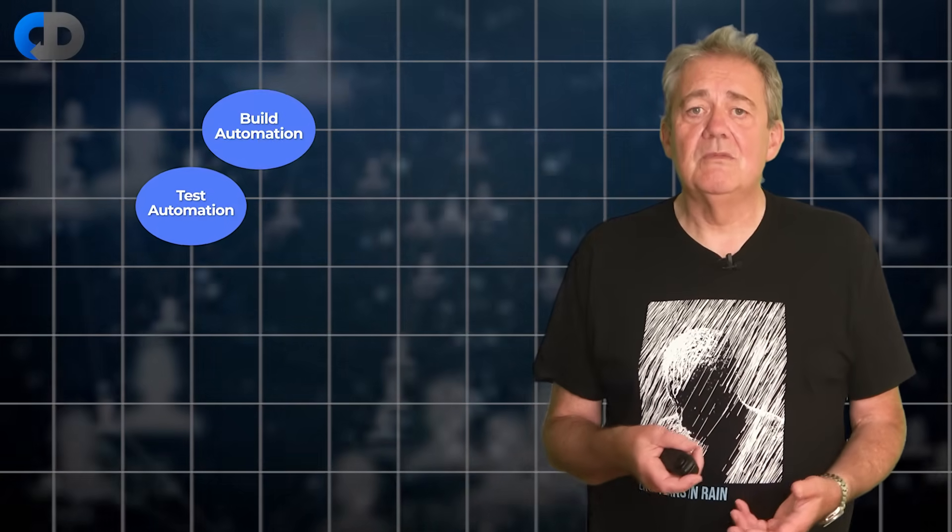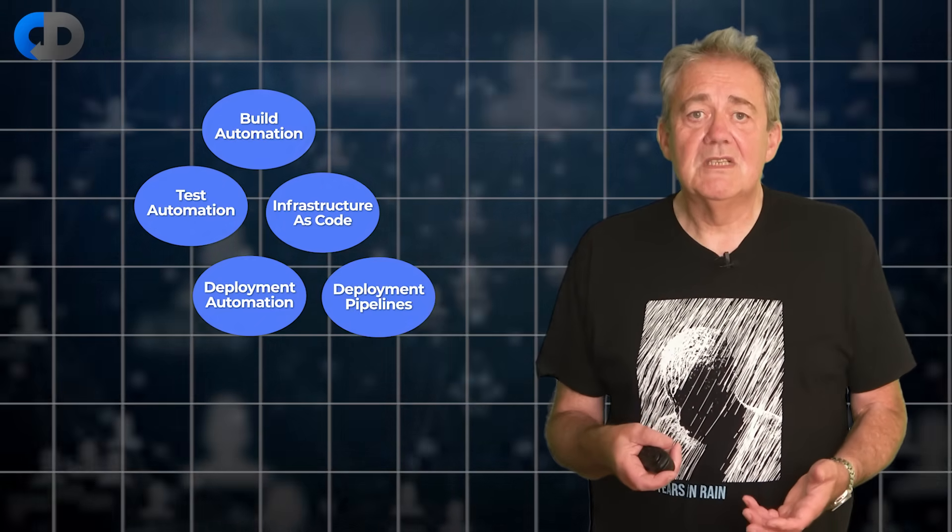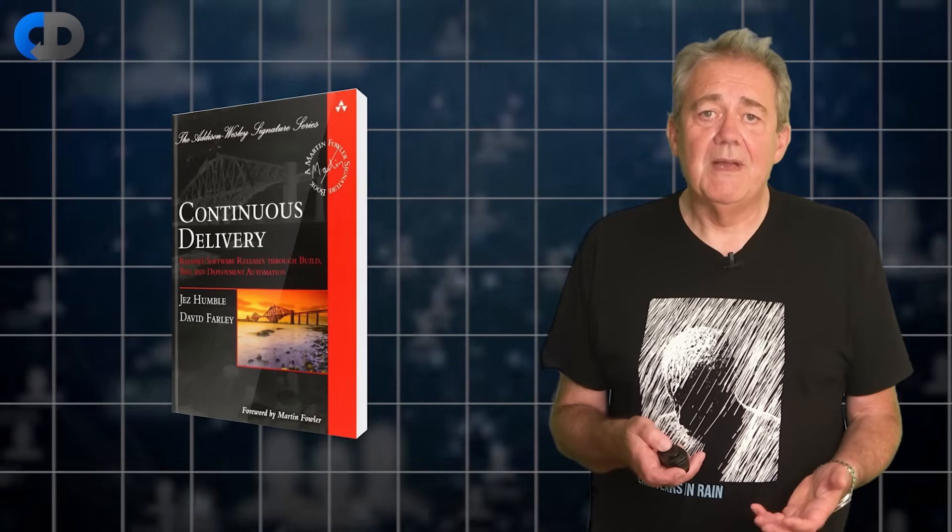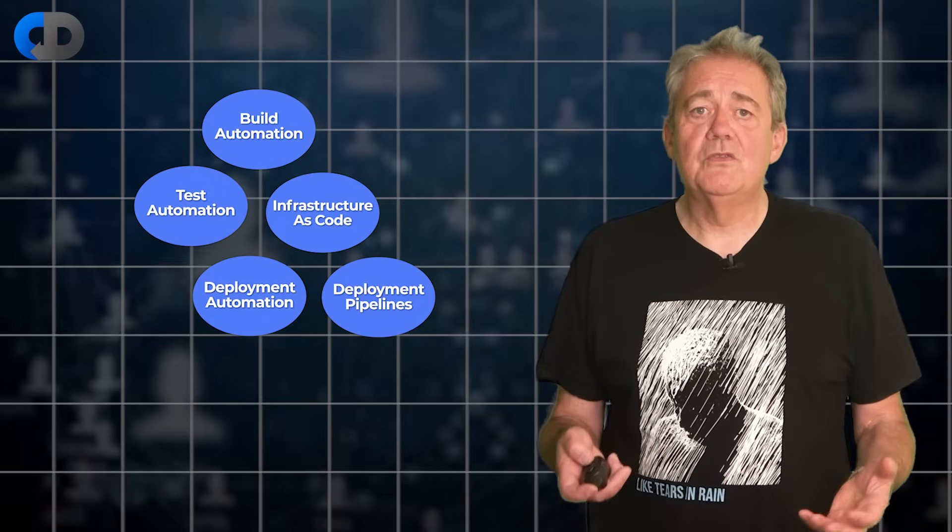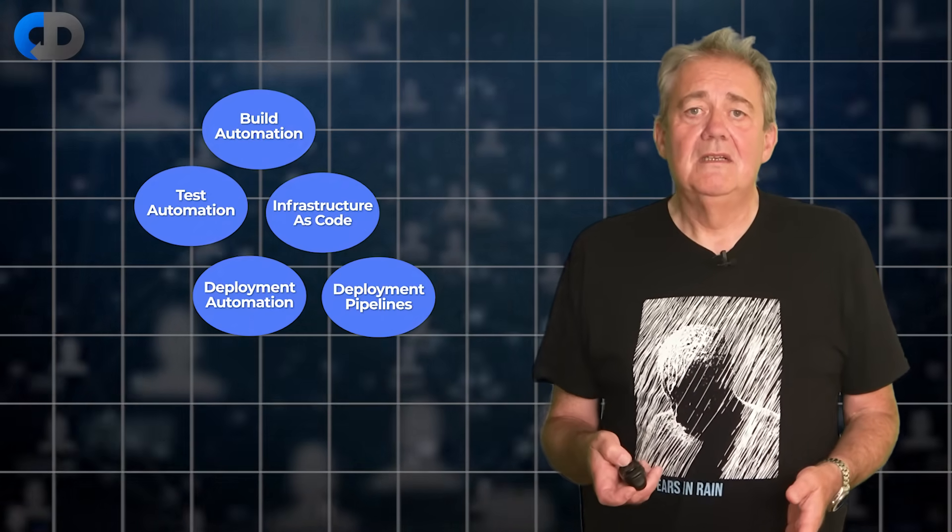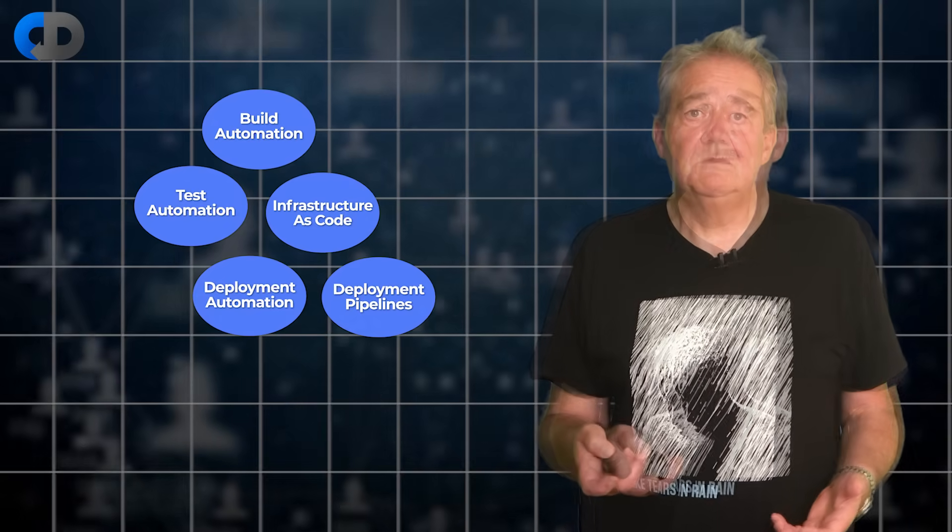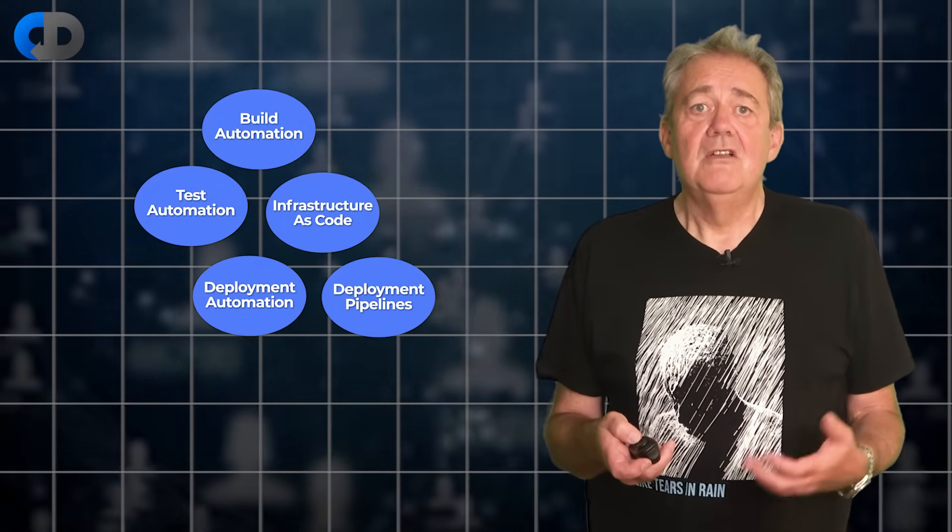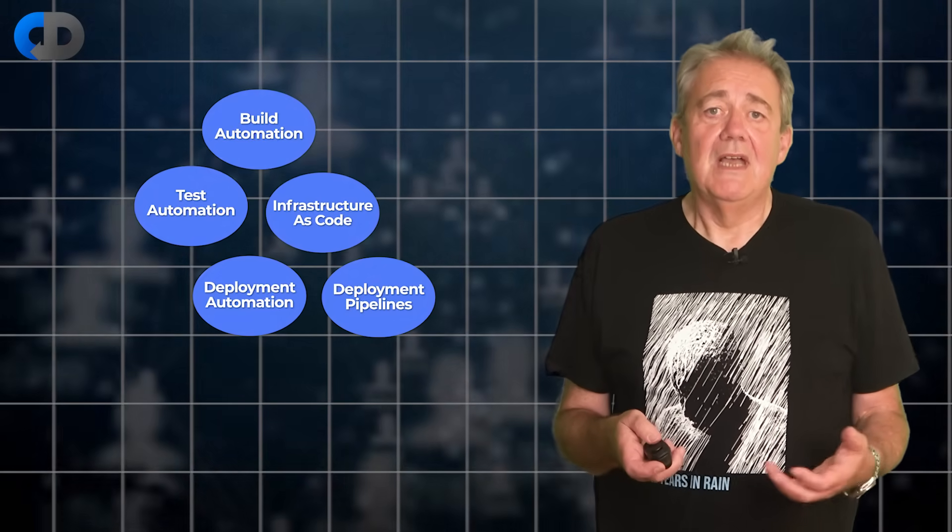I think when most people think in terms of Continuous Delivery they probably start here. We're talking about Build Automation, Test Automation, Infrastructure as Code, Deployment Automation, Deployment Pipelines. These are core ideas for Continuous Delivery and we went into quite a lot of detail about them when we described them in our book. These ideas though don't really define Continuous Delivery rather they support our ability to get useful software into the hands of our users at any time. They are the mechanism rather than the practice. The practice is to do whatever is necessary to keep your software releasable all the time continuously. And the whatever is necessary includes most if not all of the DevOps ideas.